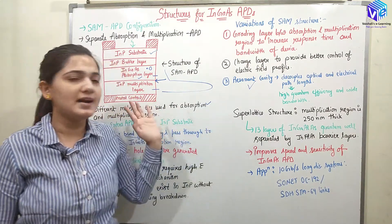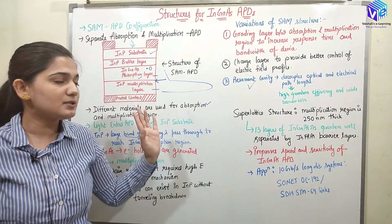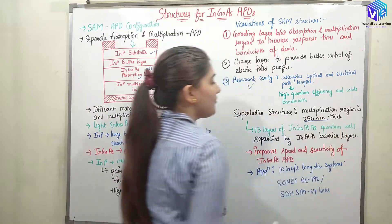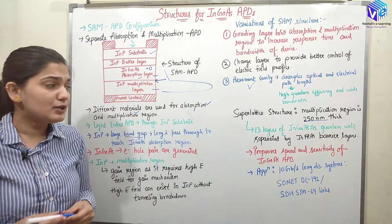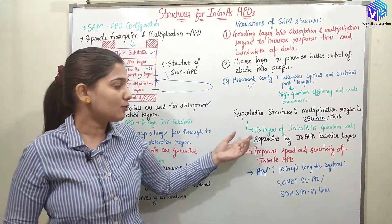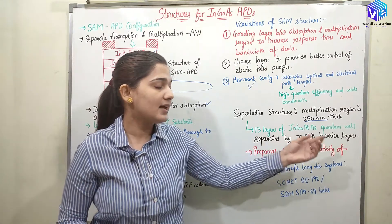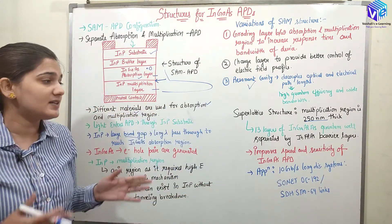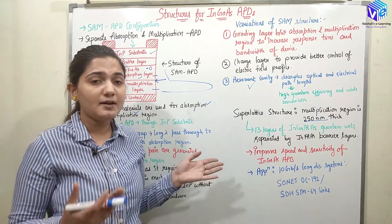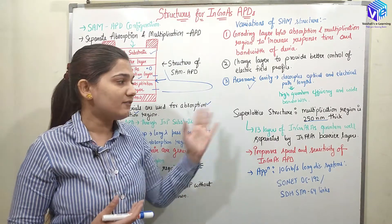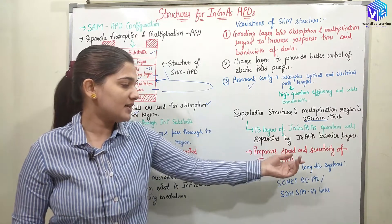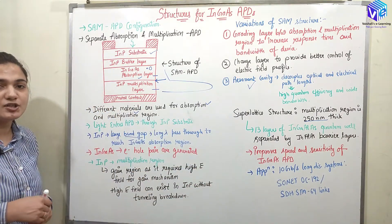After that we have the super lattice structure. As the name suggests, we are using a lot of layers. The multiplication region is around 250 nanometers thick. We are using 13 layers of indium gallium aluminium arsenide for the quantum well, and the quantum well is separated by an indium aluminium arsenide barrier layer. These 13 layers are used for quantum well formation to increase the speed and the sensitivity of the indium gallium arsenide avalanche photodiodes.